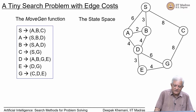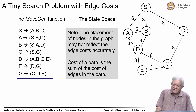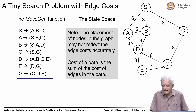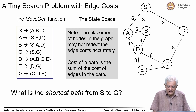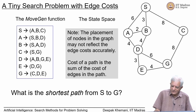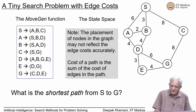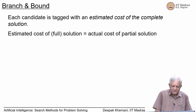Let us look at a small state space search problem. The move-gen function is given on the left: from S you can go to A, B, C; from A you can go to S, P, D, and so on. The state space graph is shown on the right with edge costs involved. The placement of nodes is schematic, not necessarily accurate in terms of distances. The question we want to ask is: what is the shortest path from S to G, thinking of edge costs as distances — for example, S to B is 3 km, B to D is 4 km.